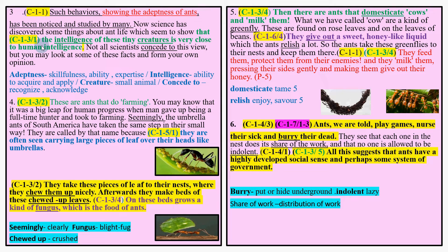This is the scheme. You can read this — this is the same paragraph. Actually, in that paragraph, there are many things. For example, paragraph number 3: 'Such behavior showing the adeptness of ants has been noticed and studied by many.' So this paragraph shows the adeptness of ants. If you don't understand the meaning of 'adeptness', you can refer to the glossary or dictionary.